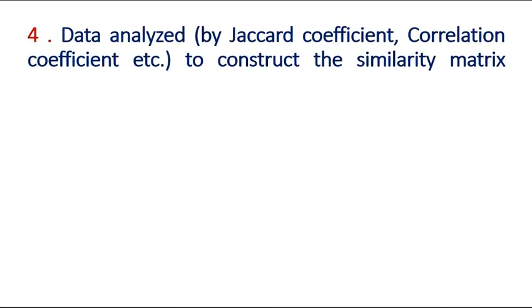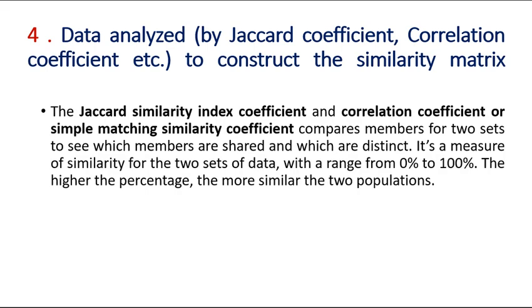Step 4: the characters we have represented are now analyzed using different coefficient formulas. The Jaccard similarity coefficient and correlation coefficient or simple matching coefficient compare members of two sets to see which members are shared and which are distinct. It is a measure of similarity for two sets of data with a range from 0% to 100%. A higher percentage means the two populations are more similar.